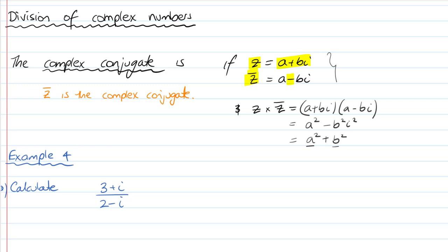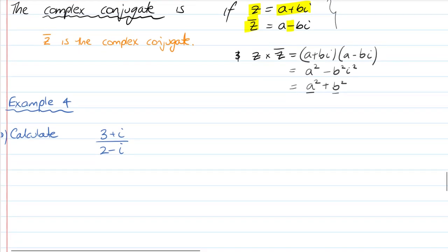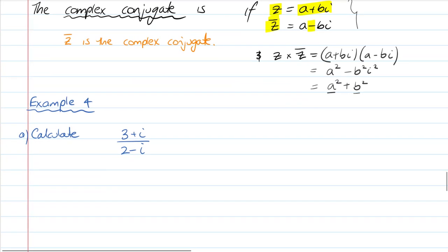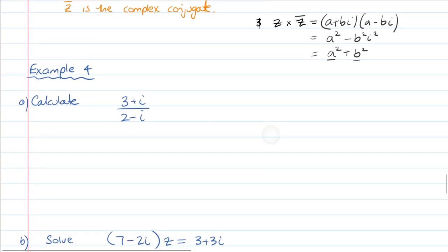So imagine you're in a situation like Example 4, where you're being asked to calculate a division: 3 plus i divided by 2 minus i. Now we typically don't technically divide complex numbers. Instead, we simplify a fraction by multiplying by the conjugate. The conjugate of 2 minus i is 2 plus i — we just flip that sign around.